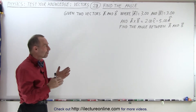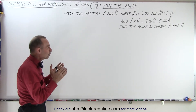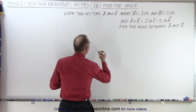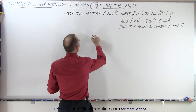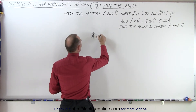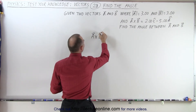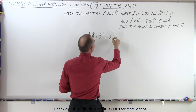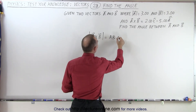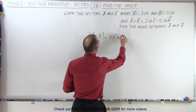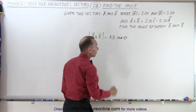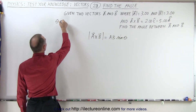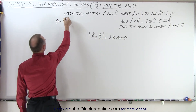There's an equation where we can find the magnitude of the cross product, so let's try starting with that. The magnitude of a cross b by definition is equal to the magnitude of a times the magnitude of b times the sine of the angle between the two vectors — and that angle, theta, is what we're trying to find.